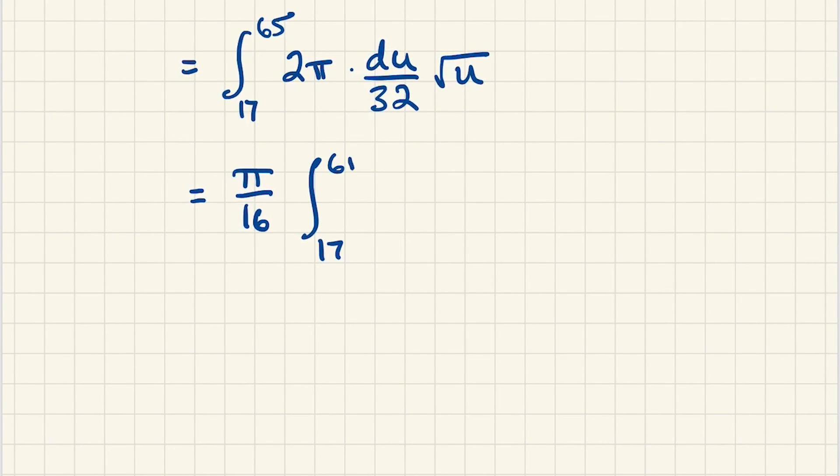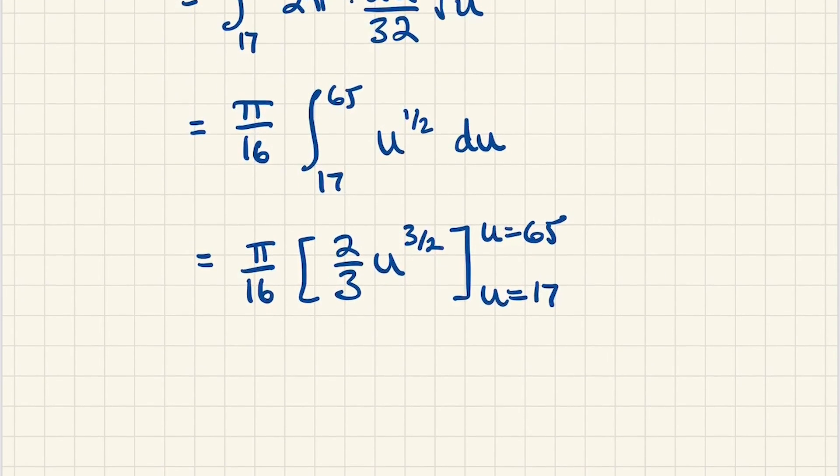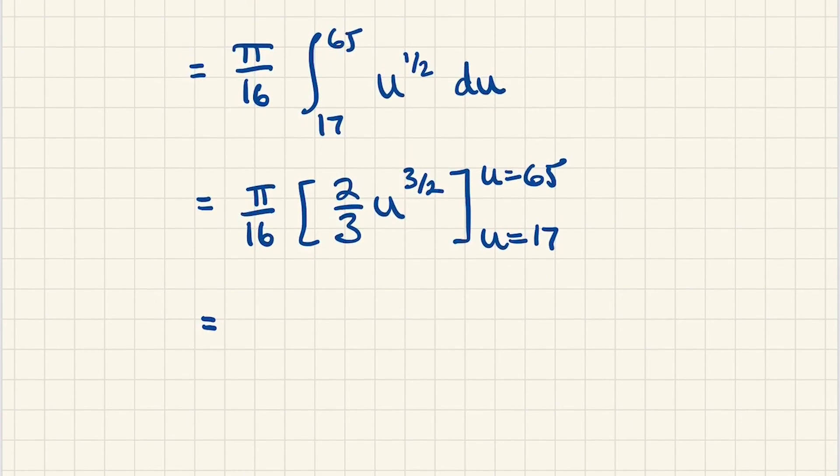17 to 65 of u to the 1/2 du. So integrating we get this with bounds of 17 to 65. And let's plug them right in. So we can actually factor the 2/3 out, giving us pi over 24, and then we plug 65 in, we'll get 65 to the 3/2 minus 17 to the 3/2. So let's just call that our final answer.